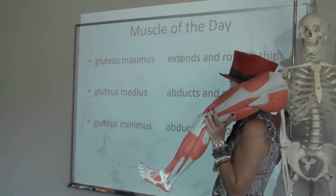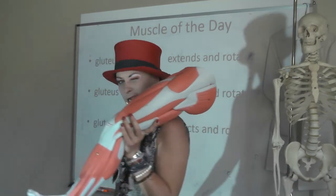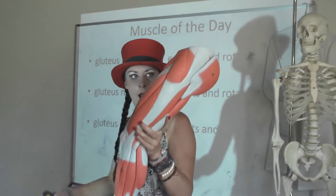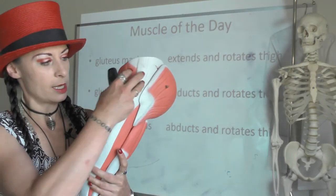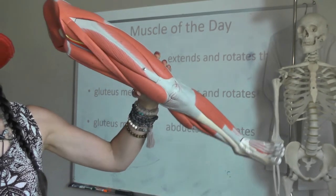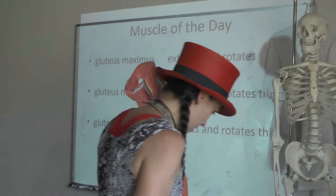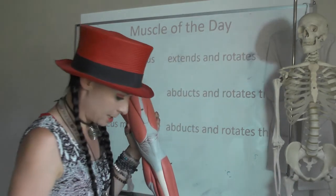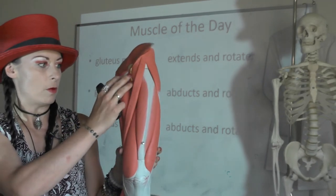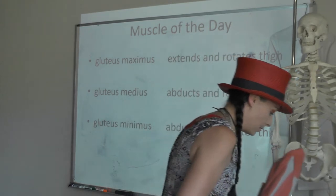Gluteus medius and gluteus minimus do the same thing — they abduct the thigh and help with medial rotation of the thigh. They initiate abduction so the thigh moves away from the midline, and because of their attachment points near the greater trochanter area, when they pull they actually medially rotate the thigh.